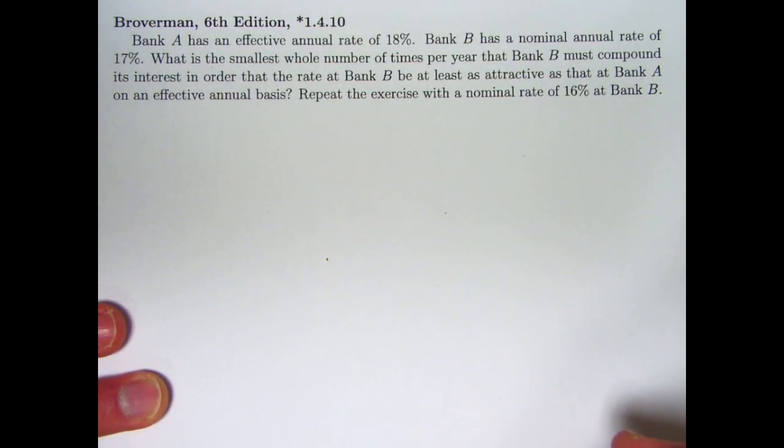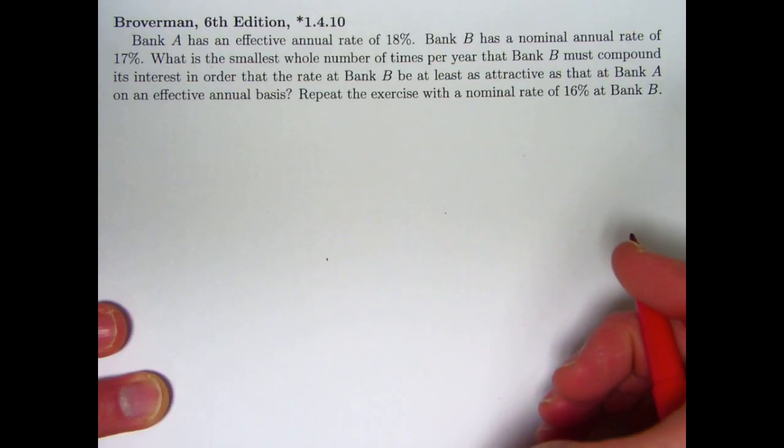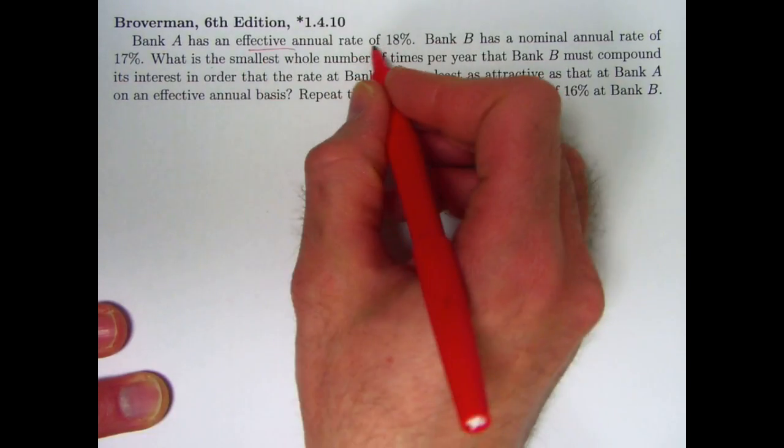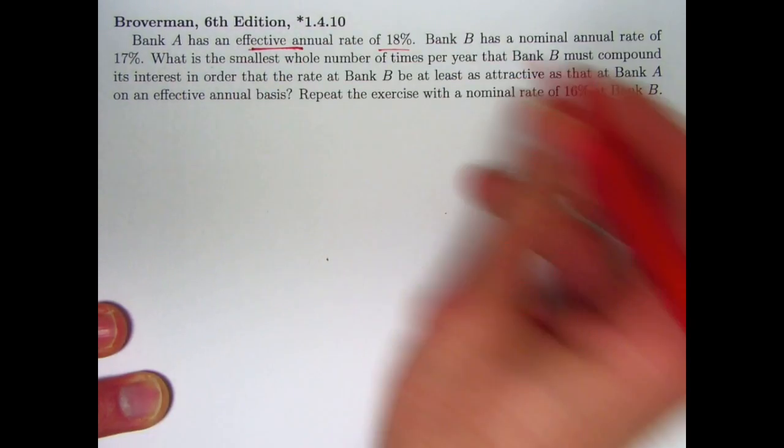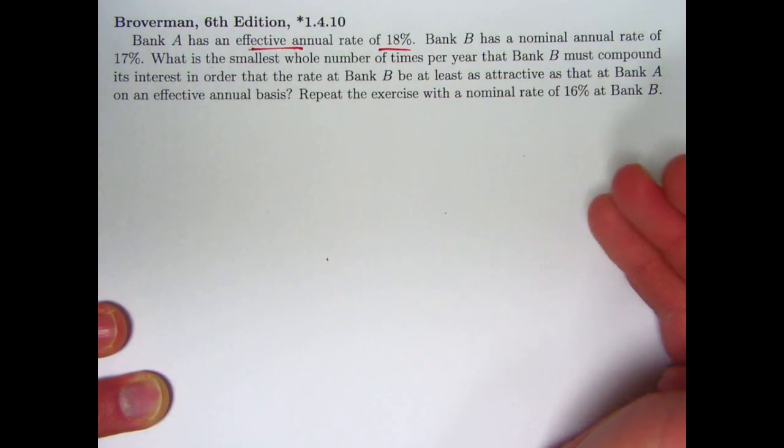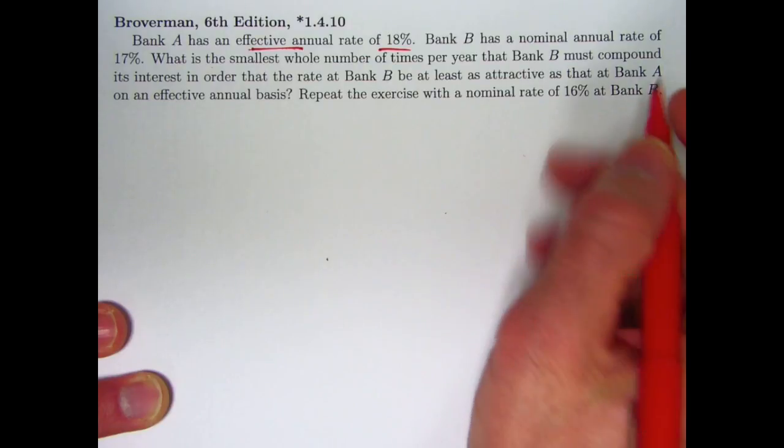How often should compounding occur to make one bank's return better than another's is what this is about. All right, here's the problem. Bank A has the completely unrealistic effective annual rate of 18%. I'm making this video in the year 2017. Savings accounts have microscopic interest rates, so that's way unrealistic, but we will go with it anyway. That's an effective annual rate or yield. Your money is going to grow by 18% each year.